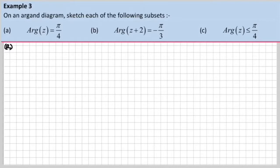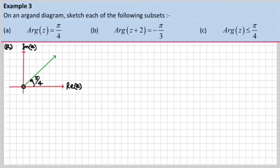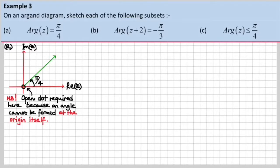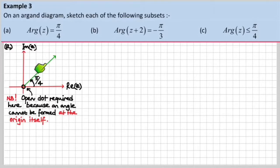Just in case they pull a swifty on you. Part A. There is our Argand diagram, and this is what we're looking for. I want to point out that the open dot here is required because an angle cannot be formed at the origin itself. We're travelling away from the origin to get our path of points. It's a ray. It has an arrowhead to indicate the direction in which we're travelling. The open dot is necessary because you can't form any kind of a ray or line with just one point being the origin itself.